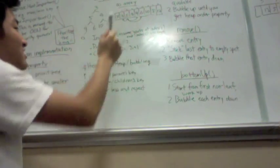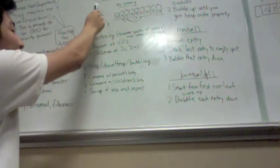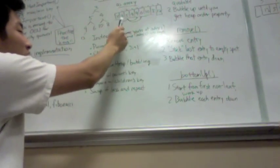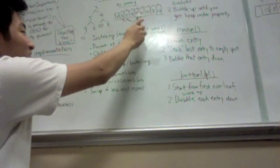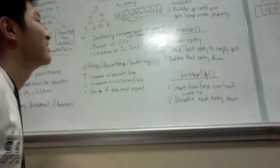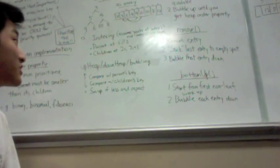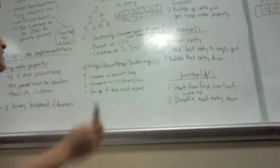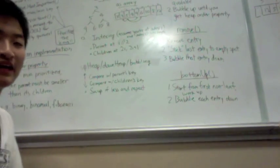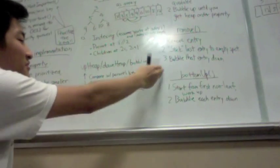For example, if I'm at 5, 5 is index 2. Its parent is 3 and it's at 2/2, which is 1. And its children are at 2i, which is 4, and 2i plus 1, which is index 5. That's 6 over here.